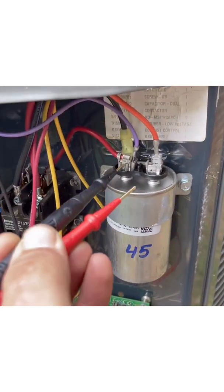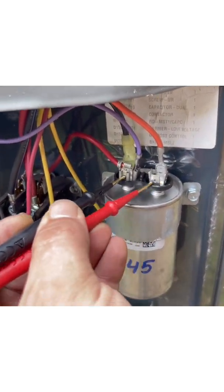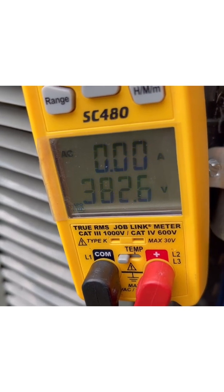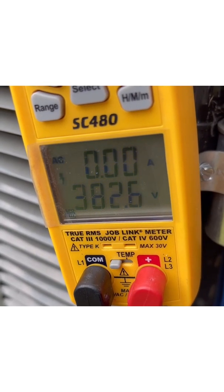And then we're going to go back and we're going to check the voltage off of from common to Herm on the capacitor. 382.6 is what we're going to go with.